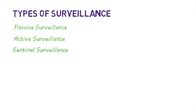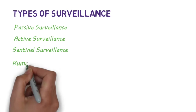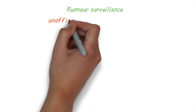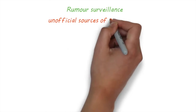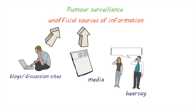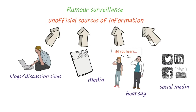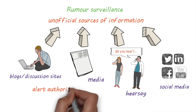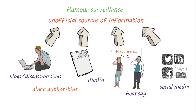Another form of surveillance that's becoming increasingly useful in today's interconnected world is rumor surveillance. This type of surveillance relies on unofficial sources of information like blogs, internet discussion groups, media, hearsay, and social media sites. Rumor surveillance can alert public health authorities to incidents or events that require further investigation and can lead to early detection of disease outbreaks.